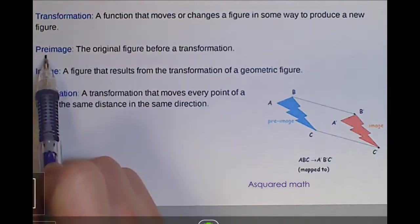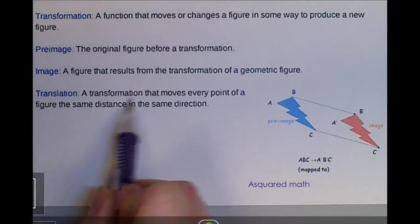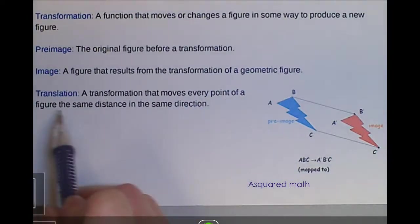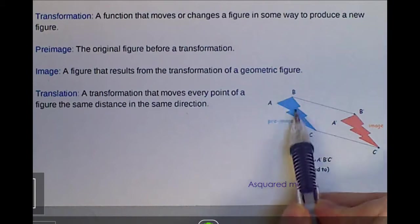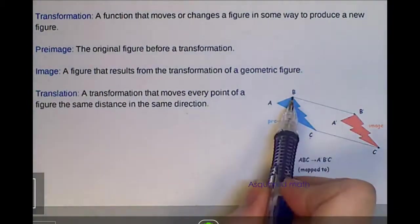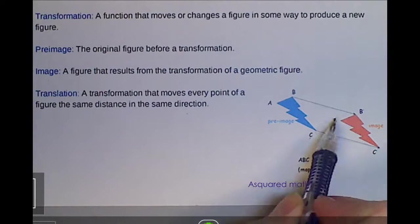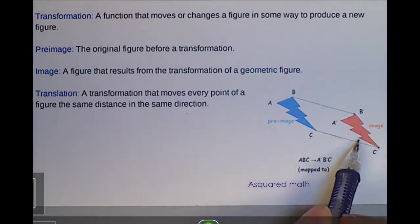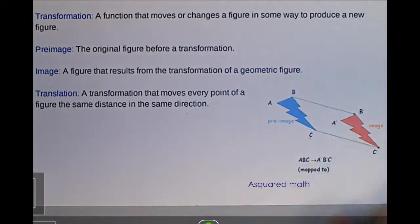And we're going to see how the original image moves or changes to get our final image. The original image we call the pre-image, and then the final picture we call the image. So I've been talking about a translation. Translation is a transformation that moves every point of a figure the same distance in the same direction. And I have a picture over here of a lightning bolt. Our pre-image is lightning bolt ABC, and you'll see it follows the exact same vector.